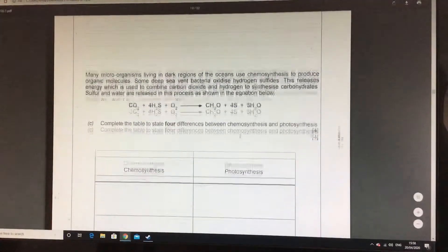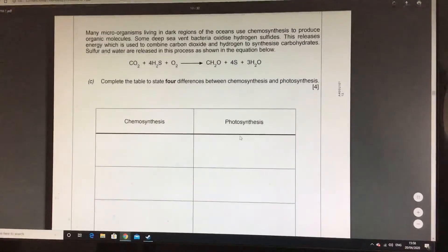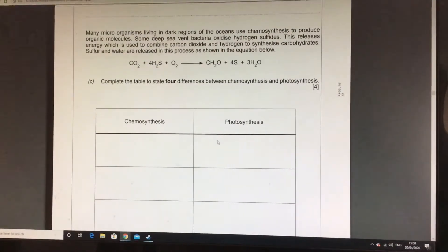Right, the next one here is expecting you to, in your head, have the photosynthesis equation alongside this one here for chemosynthesis. What is needed? What are the four differences that you could kind of see?